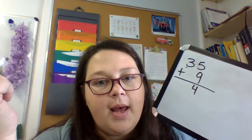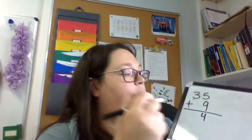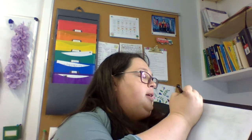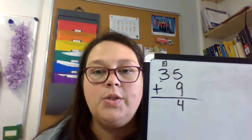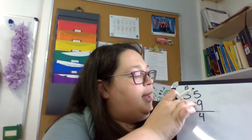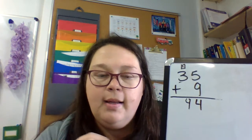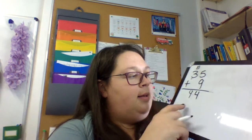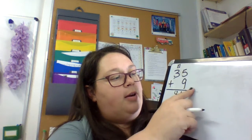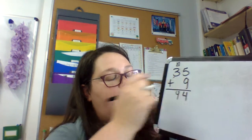9 plus 5 is 9, 10, 11, 12, 13, 14 — so I counted and got 14. So I got a 4, but what do I do with that extra 10? I'm going to carry it over here and put it in a box, so I have 1. Now 3 and 1 more is 4. That extra 10 goes over here, and that's how you get 44 for your answer.